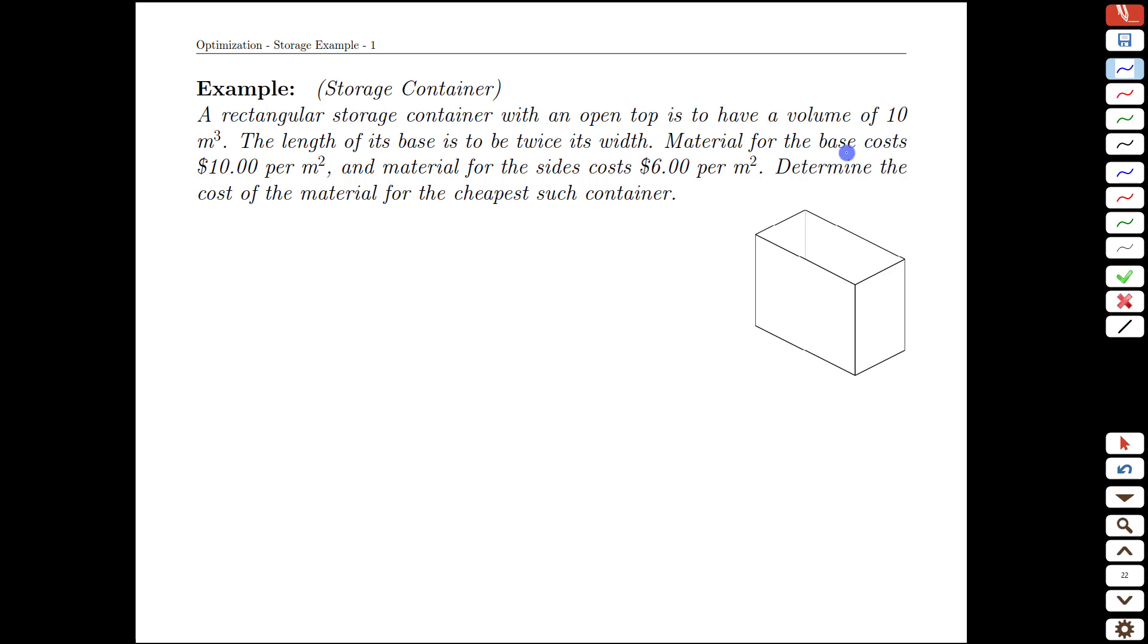And we also have something about cost. The material for the base is more expensive at $10 per square meter, whereas the sides are a little less expensive at $6 per square meter. Determine the cost of the material for the cheapest such container. Remember what our goal is. Goal is to minimize the cost.